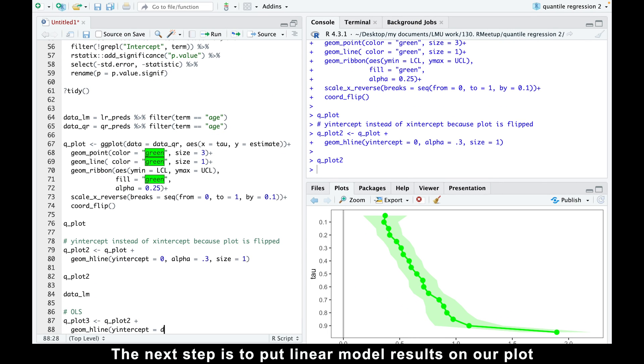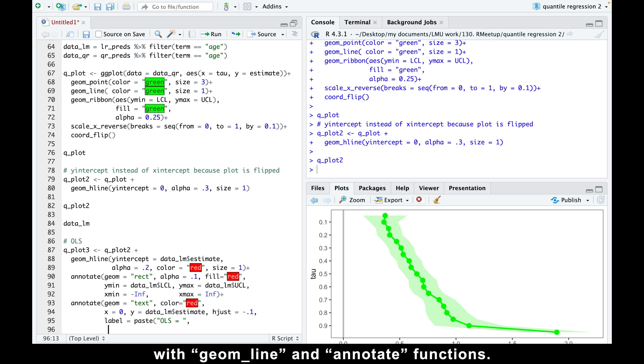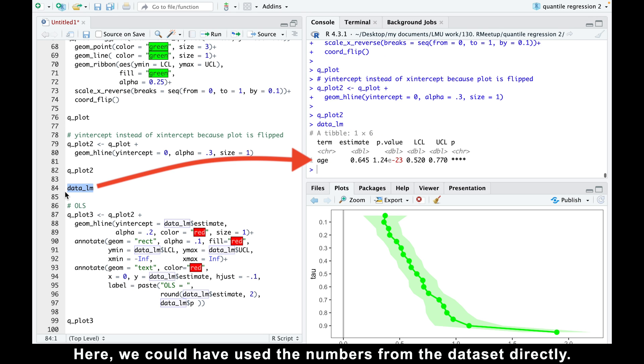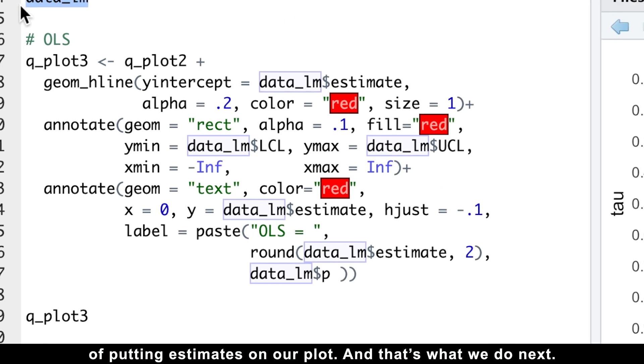The next step is to put linear model results on our plot with geom_line and annotate functions. Here we could have used the numbers from the dataset directly, but imagine that you need to do this for 10 or even 20 predictors. And you'll see that we need to somehow automate this process of putting estimates on our plot.